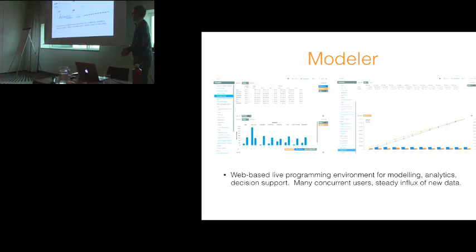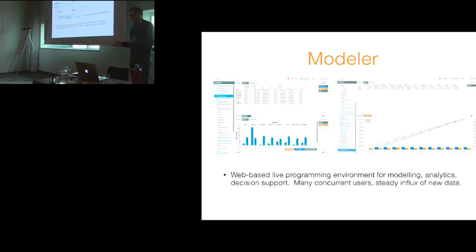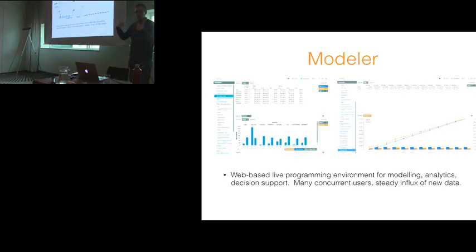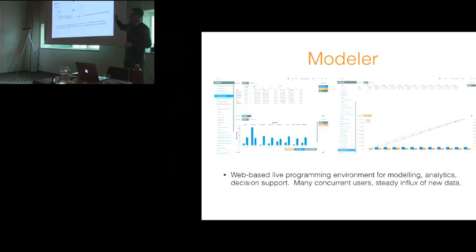Another example is our modeler framework — a web-based application where typically 100 people are doing planning for a large retailer, figuring out what should go on sale, what new inventory to introduce, and so on. They're all doing analysis and updating data while at the same time the system is slurping in new sales data to update forecasts. This one is different from the previous two in that it's actually modifying program code — all of these people have an environment like Excel on steroids where they can add new rules through a GUI.